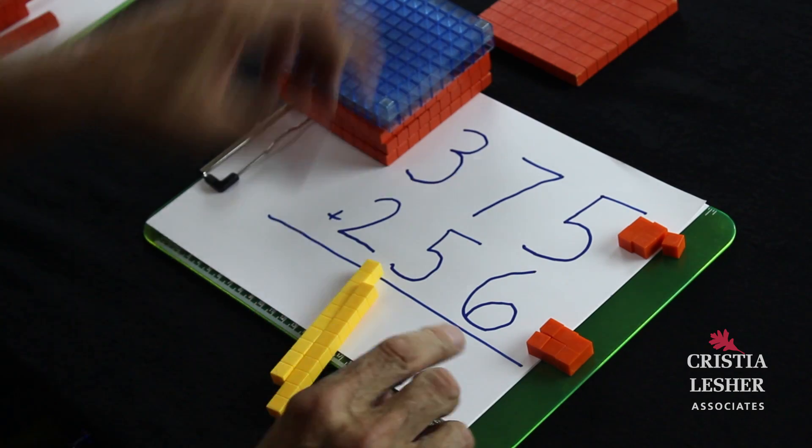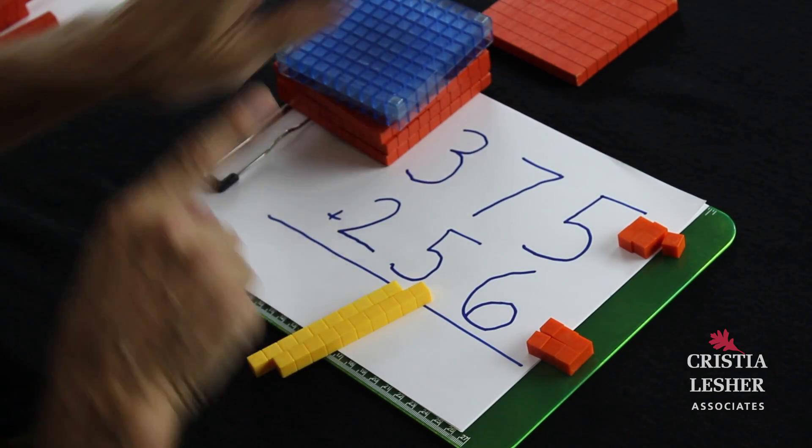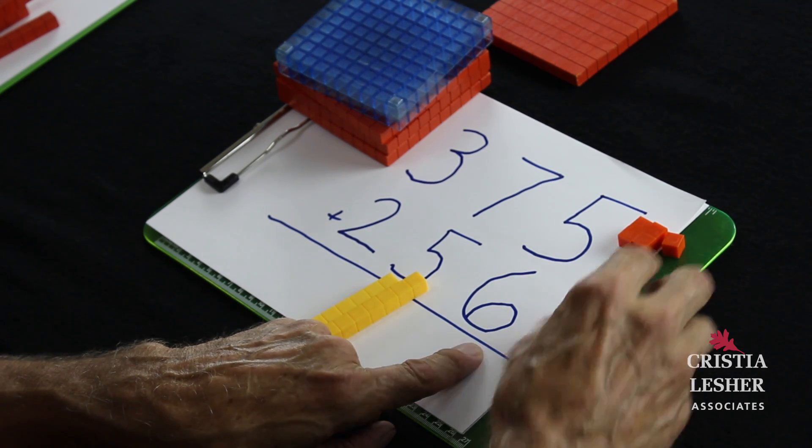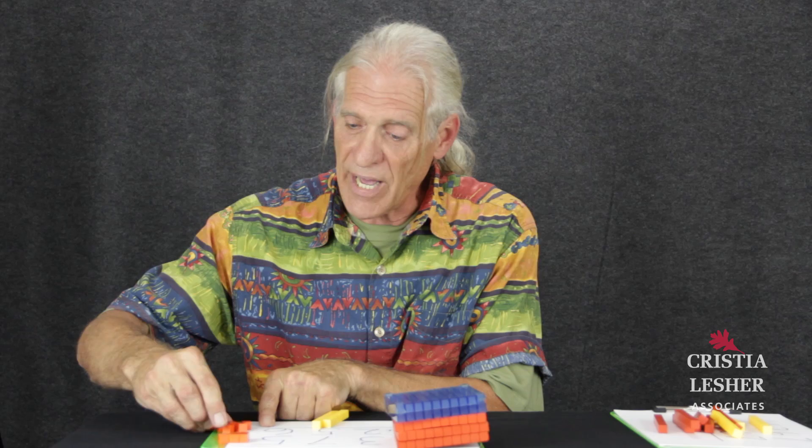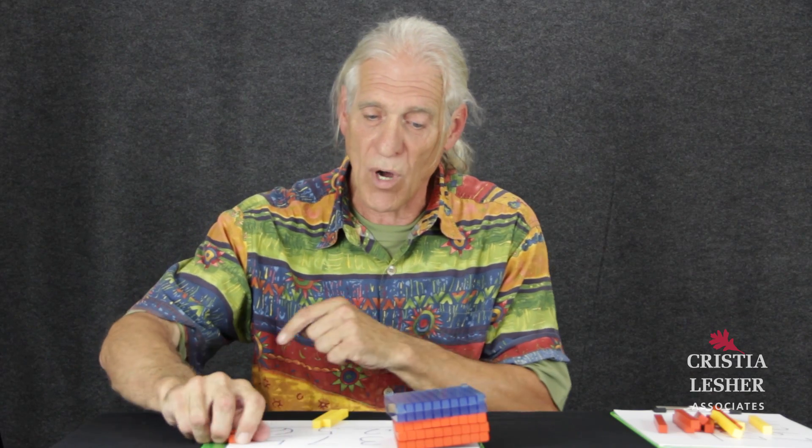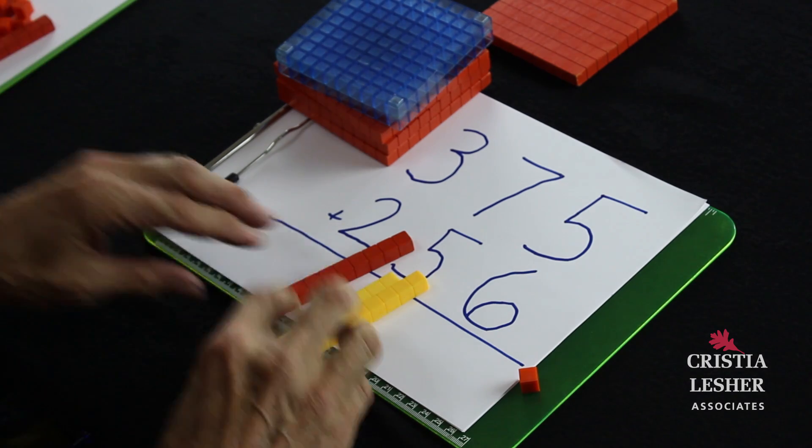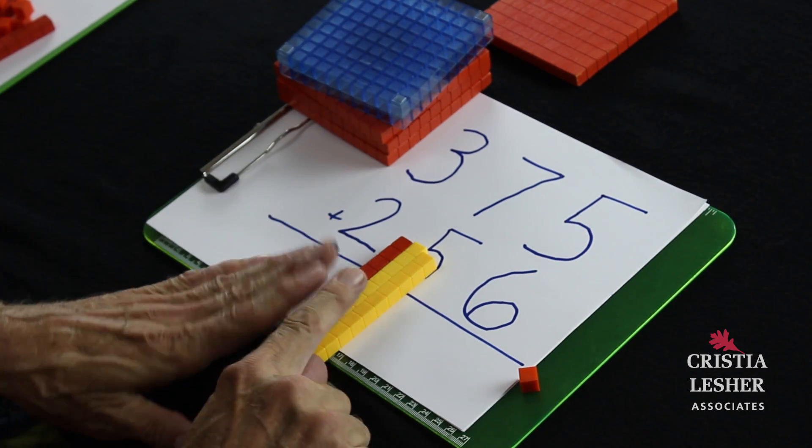And then I see that I have 620, but when I get to the ones column I have enough ones to trade for another 10. When I trade in 10 ones for another 10 stick, I have 631.